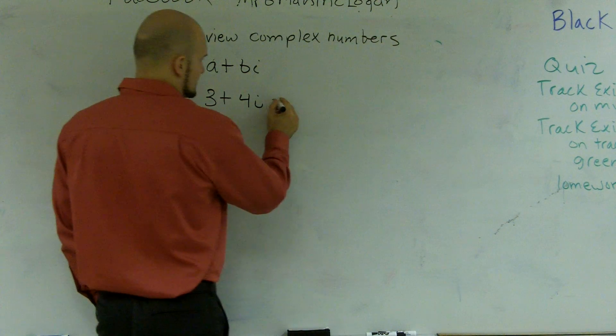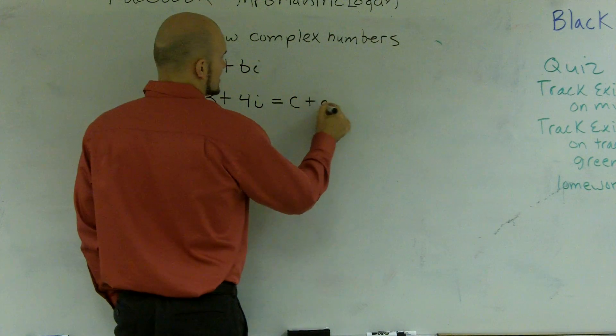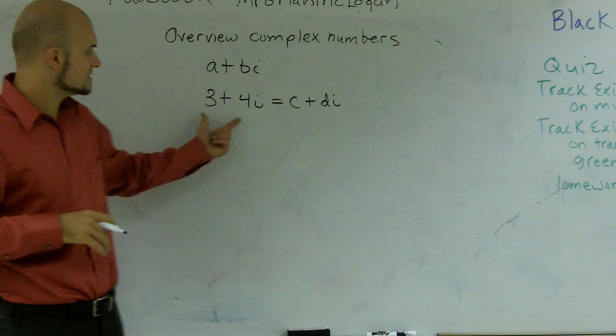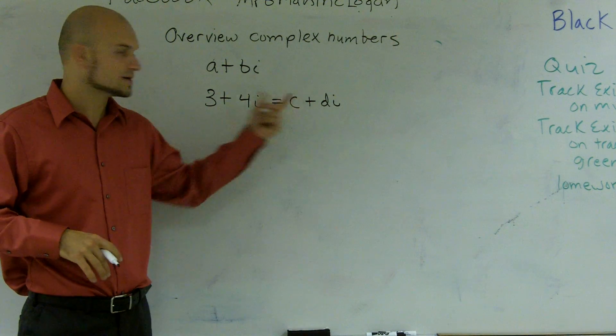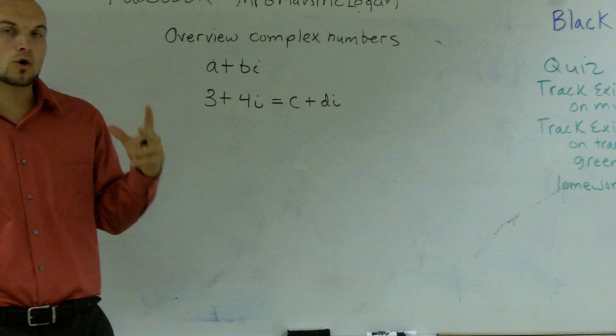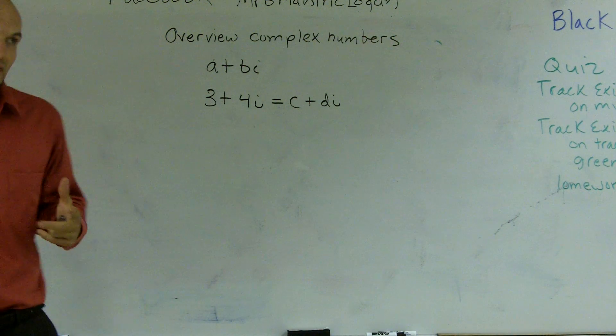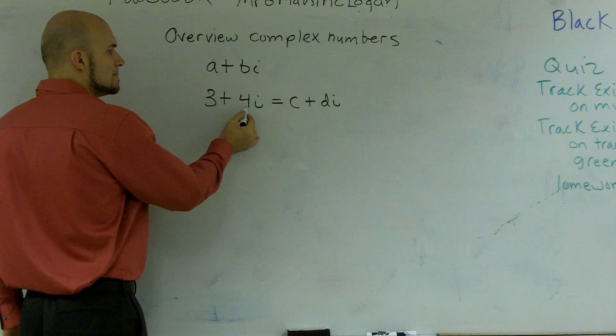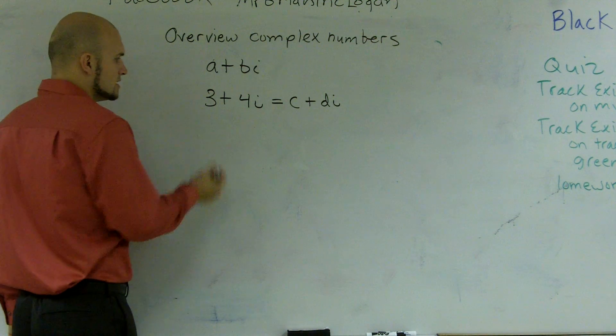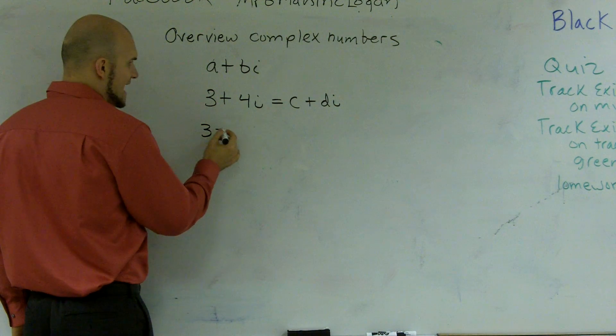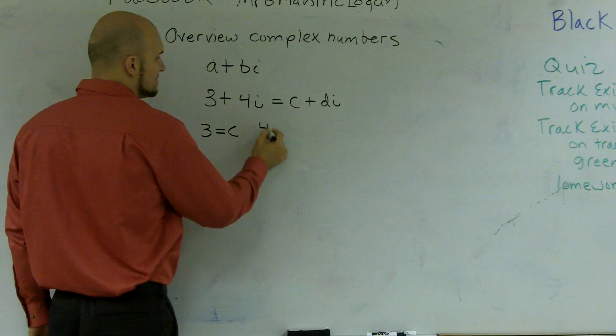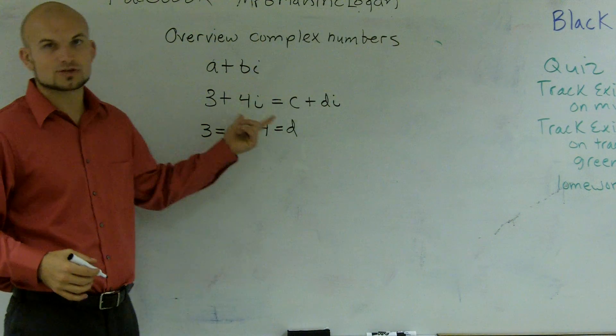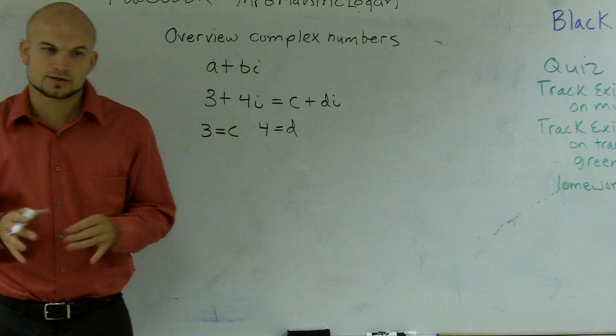And if I said 3 plus 4i was equal to c plus di, these two complex numbers are only equal if and only if my real is equal to my real and my imaginary is equal to imaginary. So therefore I can say 3 has to equal c and 4 has to equal d for these two complex numbers to equal each other.